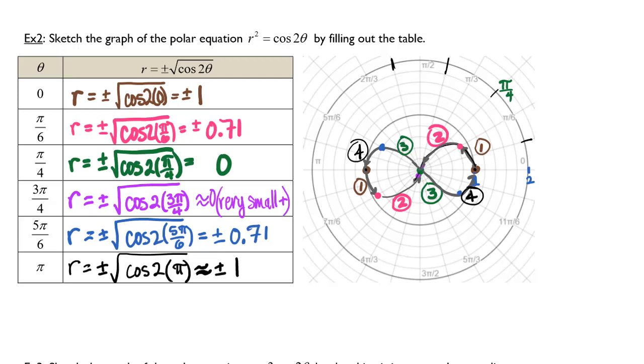So this graph wraps around. And it makes this figure 8 shape.